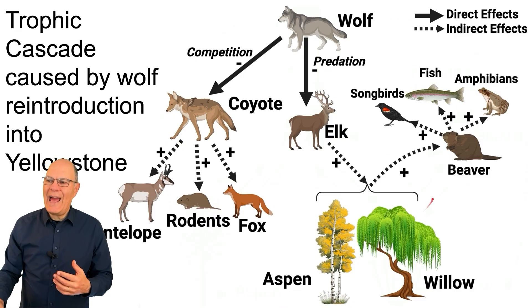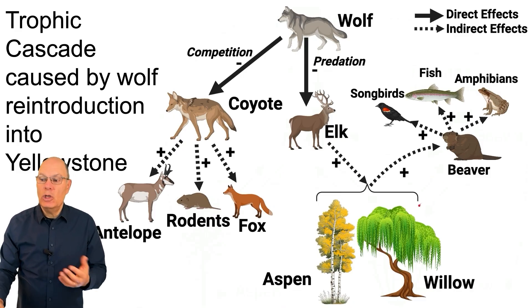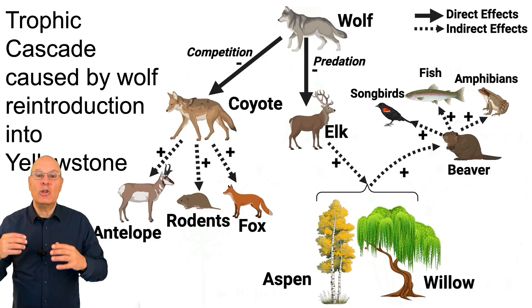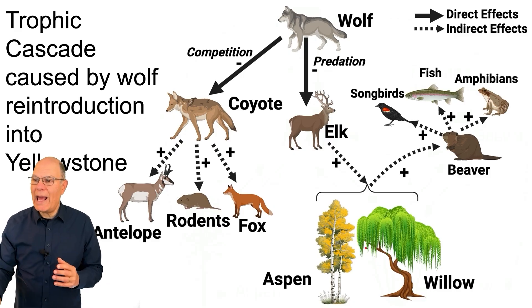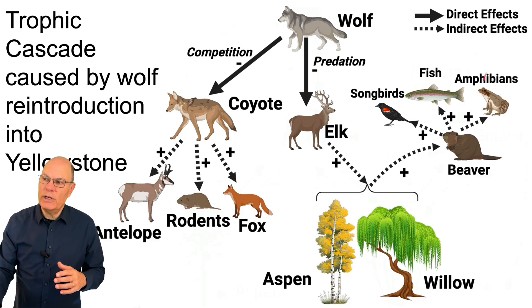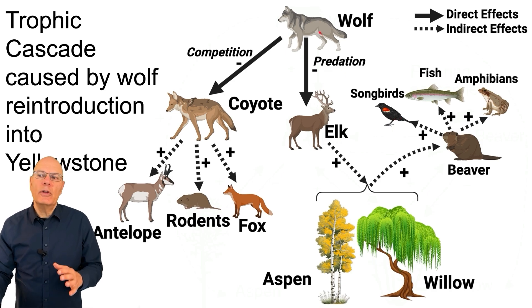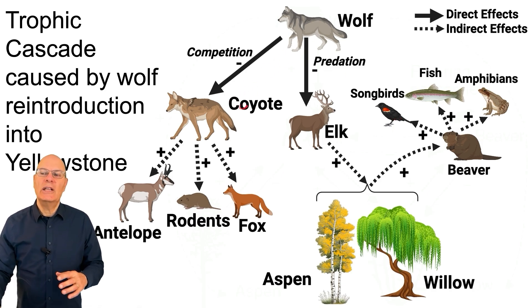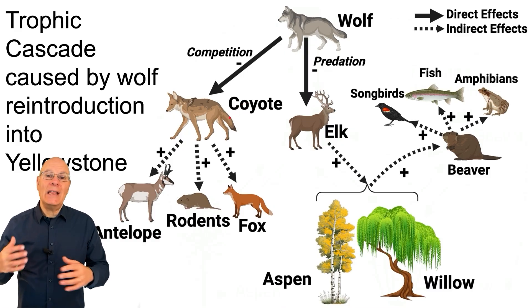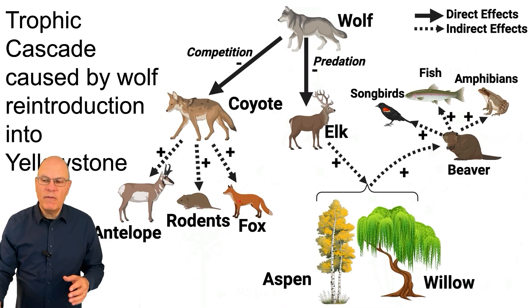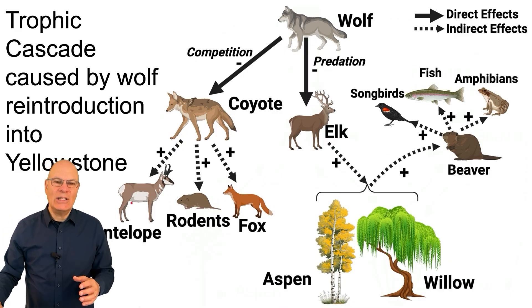That provided habitat for beavers to use the willows and aspens to create beaver dams. That created great aquatic habitat, and that led to an increase in organisms like amphibians, fish, and songbirds. The wolves were also competitors with the coyotes, so their reintroduction led to a decrease in coyote numbers, and that led to flourishing of some coyote prey, including foxes, rodents, and antelopes.